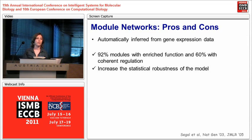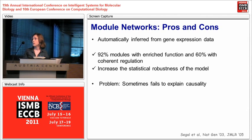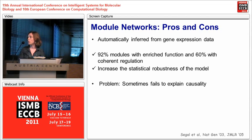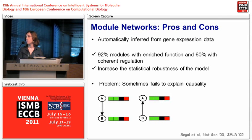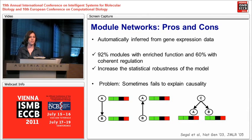However, module networks, like other inference models, suffer from a causality problem. Given two genes with a similar expression profile, it is sometimes impossible to decide whether A regulates B, B regulates A, or A and B are both regulated by a third gene C.